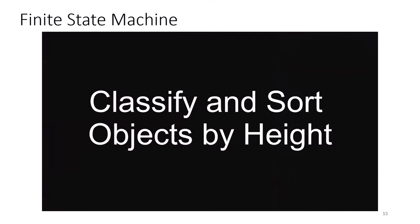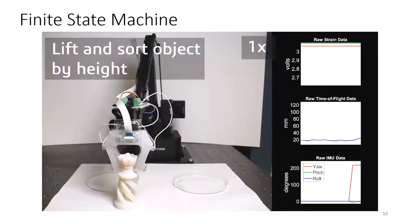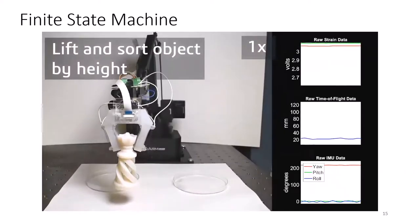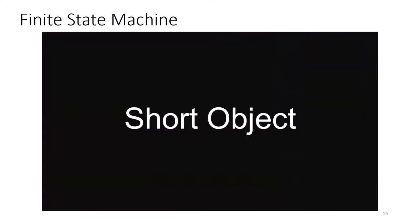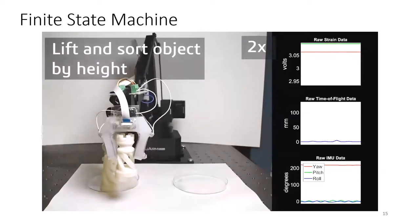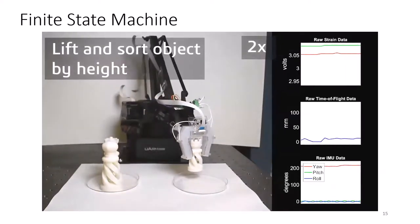For sorting, the system has correctly classified that the king chess piece is a tall object and places it on the left. Finally, the system has correctly classified that the rook chess piece is a short object, lowers the gripper more than it would for a tall object to pick it up, and places it on the right.